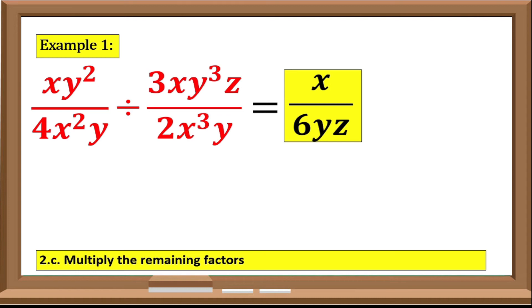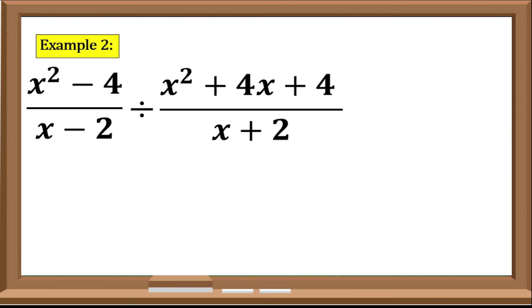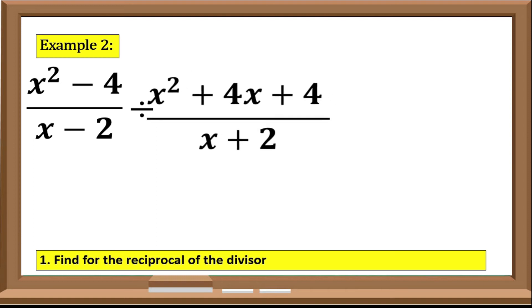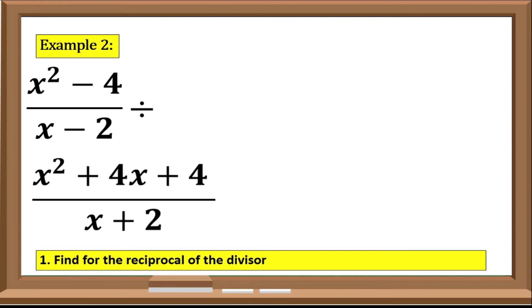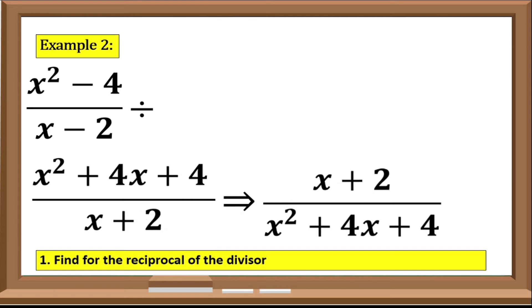Now let us try example number 2: (x² - 4) over (x - 2), divided by (x² + 4x + 4) over (x + 2). Step 1: we need to find the reciprocal of the divisor. Our divisor is (x² + 4x + 4) over (x + 2), so its reciprocal is (x + 2) over (x² + 4x + 4).